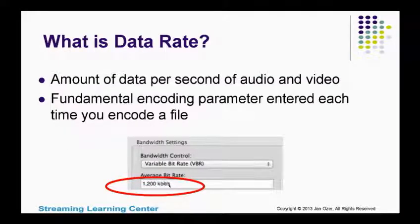So what is the data rate? It's the amount of data per second of audio and video. In most encoding tools, you set them separately. This is the average bit rate as shown in Telestream Episode per hour. It's a fundamental encoding parameter — every time you encode a file, whether it's live or on demand, you're going to enter the data rate of that file.